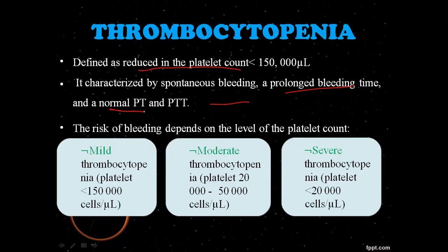The risk of bleeding depends on the level of platelet count. If platelet count is less than 150,000, then we have thrombocytopenia. Moderate thrombocytopenia is when platelet count is from 20,000 to 50,000. Severe thrombocytopenia is when platelet count is less than 20,000 cells per microliter.